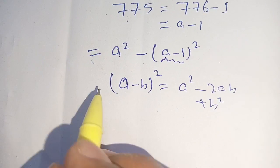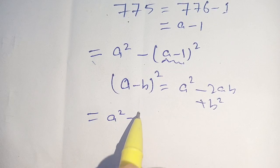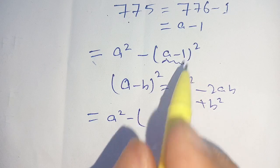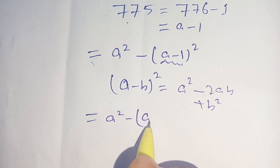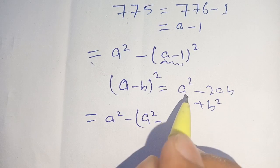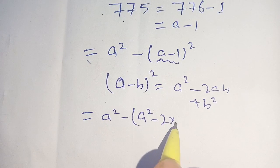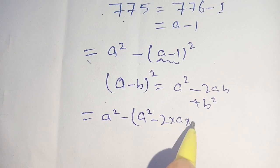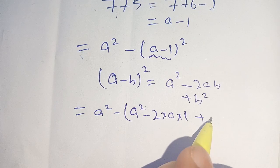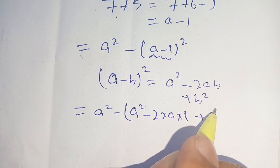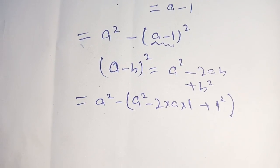Our problem will become A square minus open bracket A square minus 2 times A times B, where B is 1, plus B square which is 1 square close bracket.